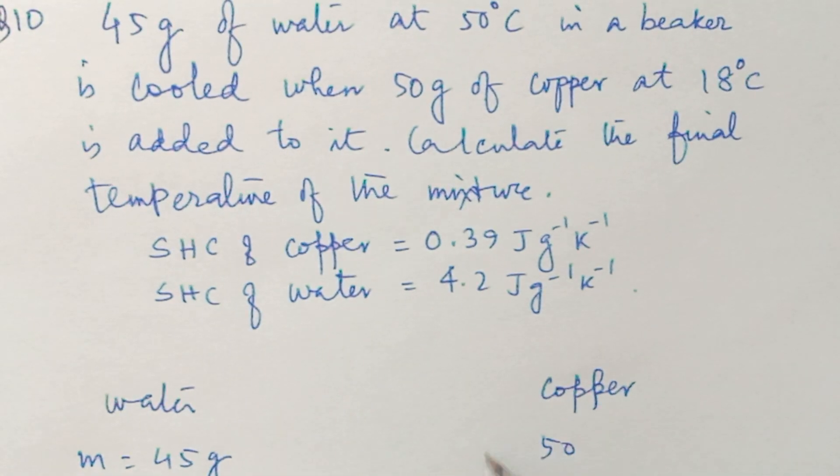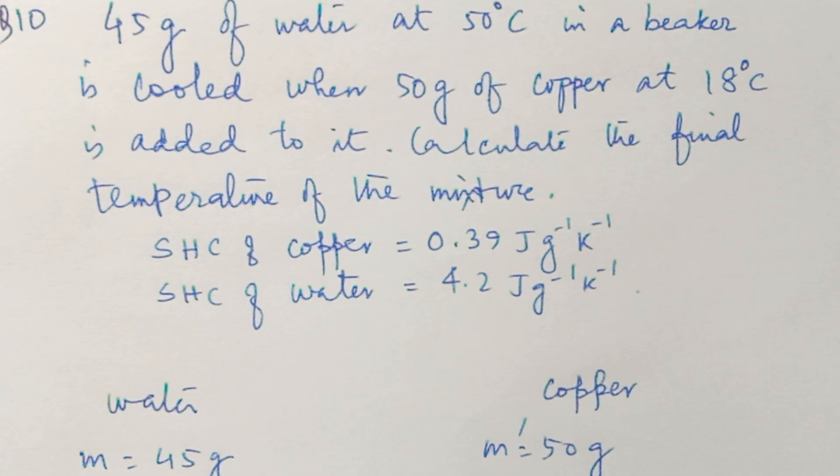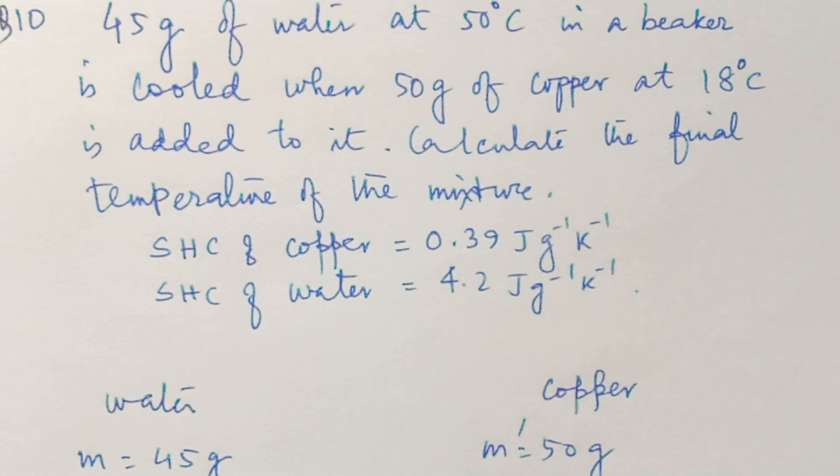50 gram is given, mass of the copper. Temperature is given: 18 degree Celsius.